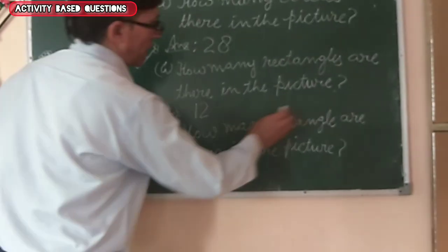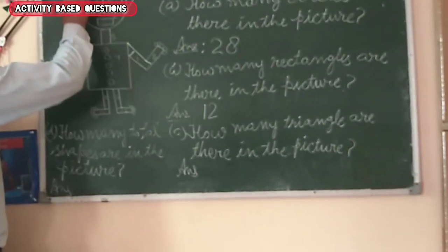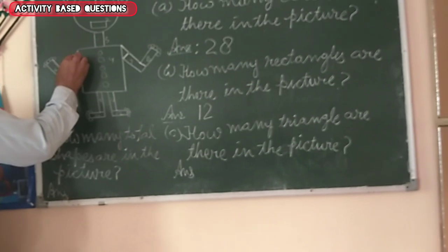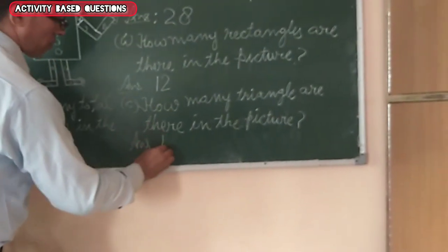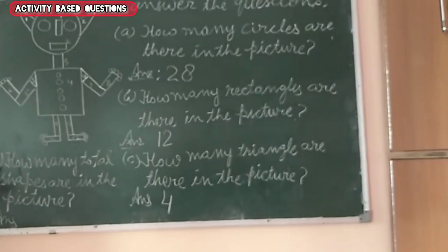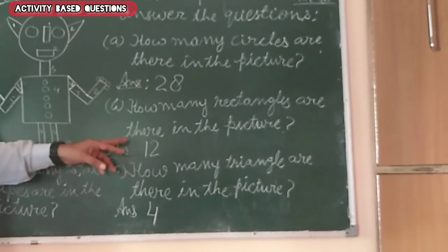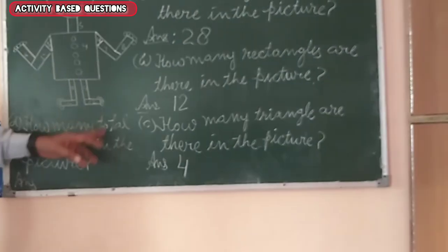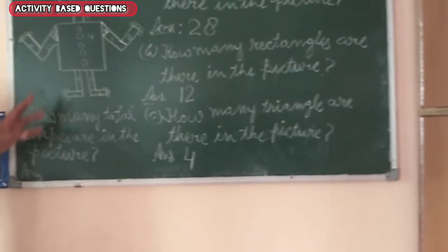How many triangles are there in the picture? 1, 2, 3, 4. How many total shapes are there in the picture?